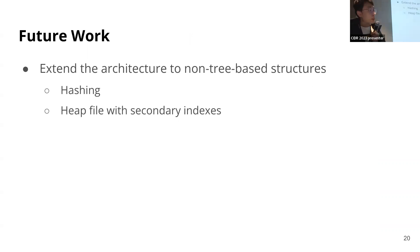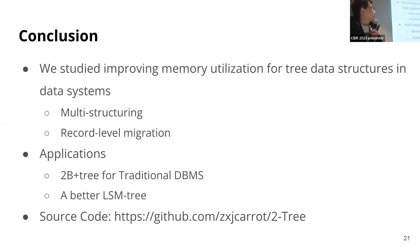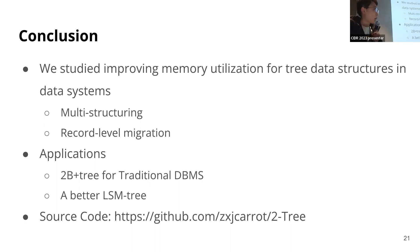Besides tree data structures, we can also apply these principles to non-tree-based data structures — for example, hashing or heap files with secondary indexes. These are all widely used structures in data systems that could benefit from improved main memory utilization for skewed workloads. In conclusion, we studied the problem of main memory utilization for tree data structures in data systems. We advocate multi-structuring and regular data migration, demonstrated through two applications to B-tree and LSM tree. Thank you for your attention.